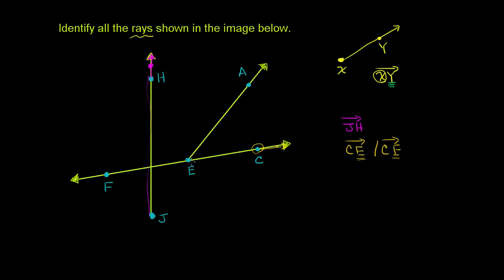From point e, you can start at e and go in the direction of c — that's ray e,c. You can also start at e and go in the direction of a — that's ray e,a. And you can start at e and go in the direction of f — that's ray e,f. Note that e,f is different from c,f because they start at two different places. They go in the same direction and both pass through f, but one starts at e and the other at c.